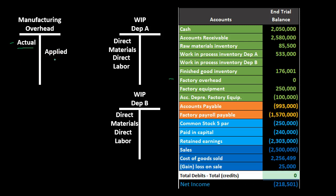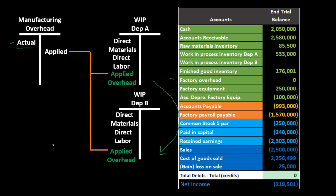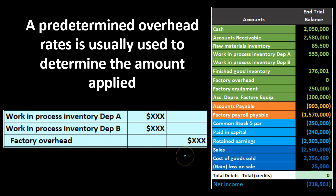We then apply overhead out using some type of estimate. Based on that estimate, overhead is applied to Department A or Department B — most likely the majority going to Department A. The journal entry credits Factory Overhead (reducing it) and debits Work in Process — Department A and Work in Process — Department B for the applied amounts.